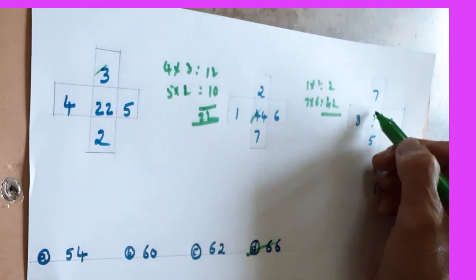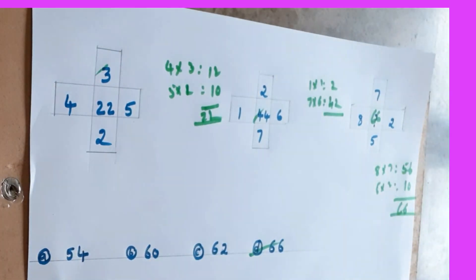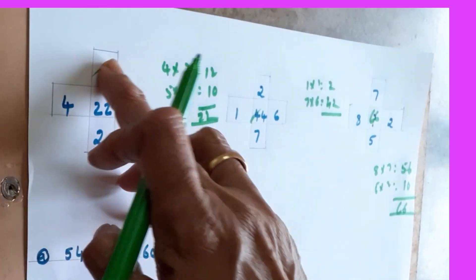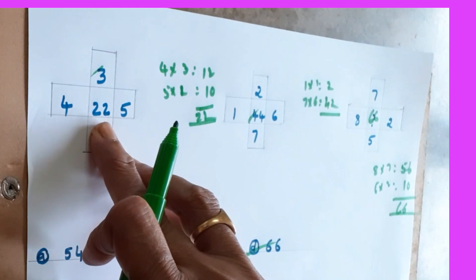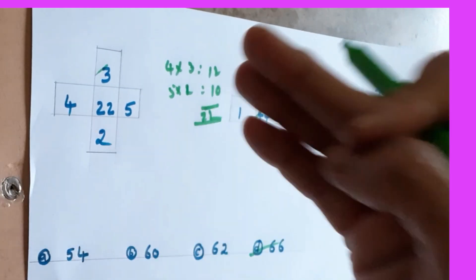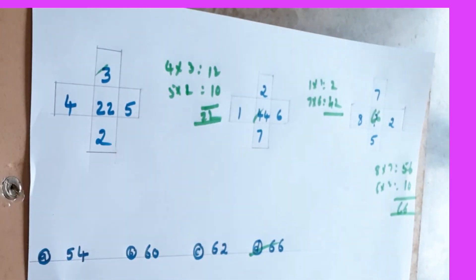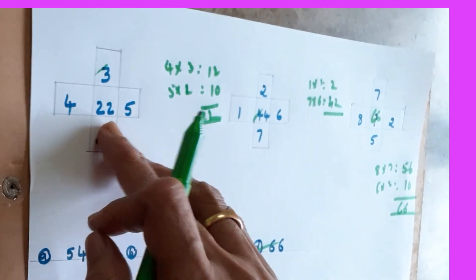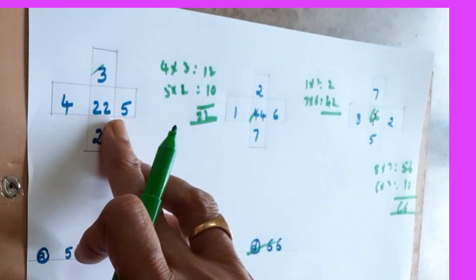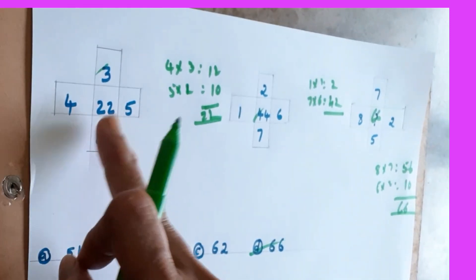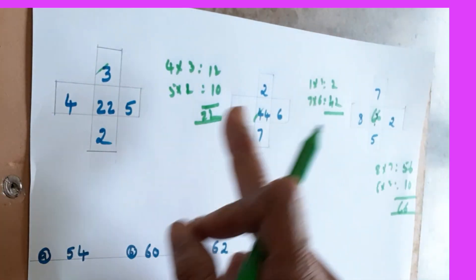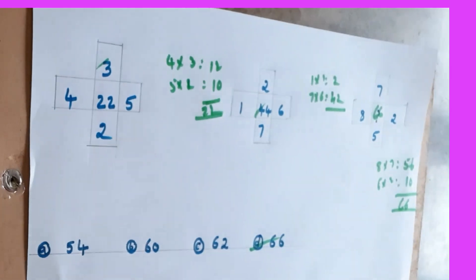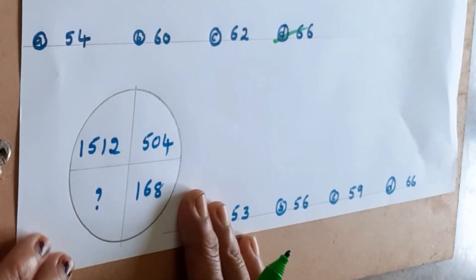Same way here also: 8 sevens are 56. 5 twos are 10. Then 56 plus 10 is 66. 66 is there, so the answer is 66. This is the way — if it is the same kind of number, see whether multiplying and adding gives the answer. If it is a big number, do squaring. If it is a more big number, do cubing. Sometimes they will give addition, sometimes subtraction. First see the first one, then apply the same logic for the second one.